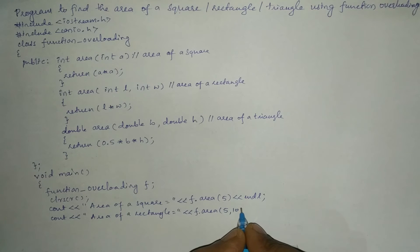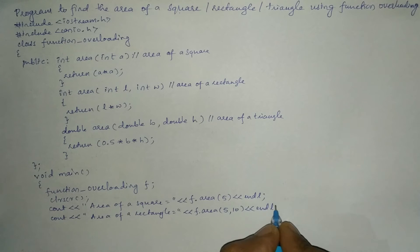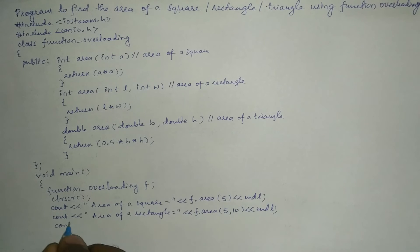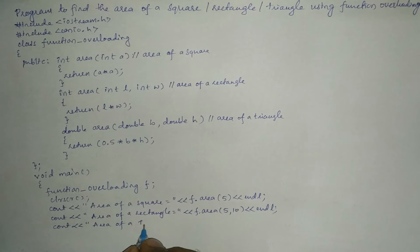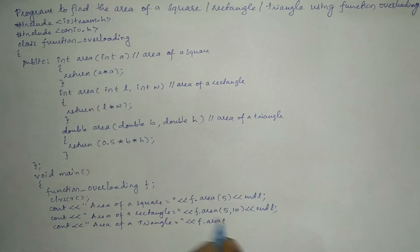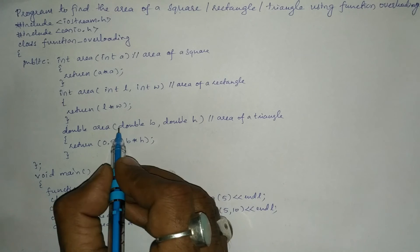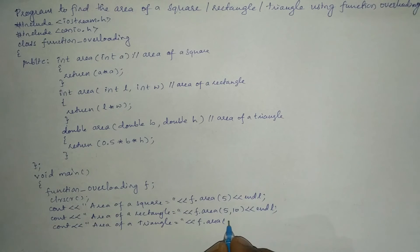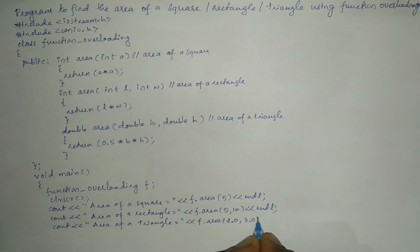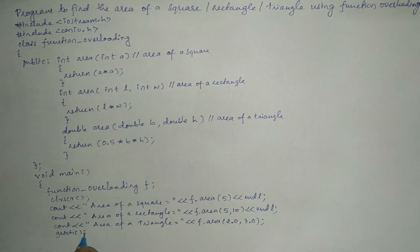We pass two arguments, for example 5 and 10, followed by endl. Next, cout area of a triangle is equal to f.area() with two double arguments, for example 2.0 and 3.0. Then we write the getch() function and the closing brace for the main function.